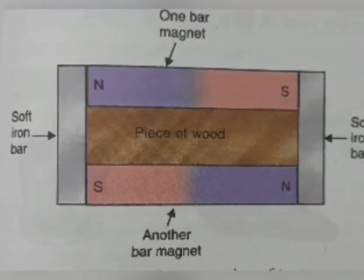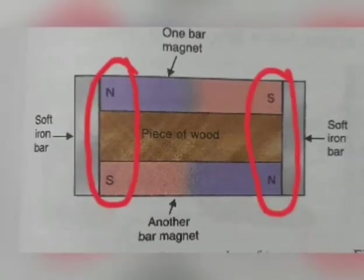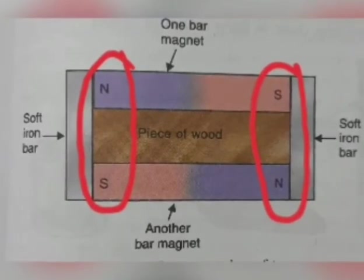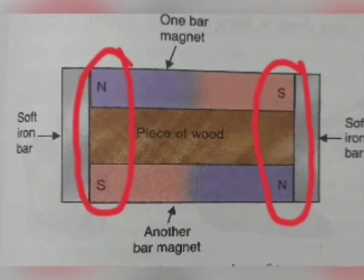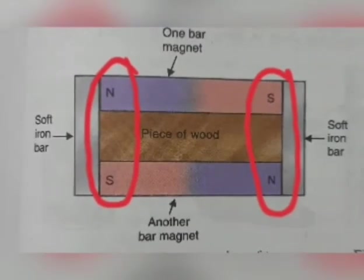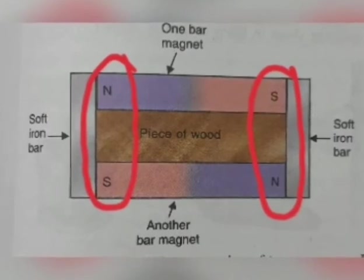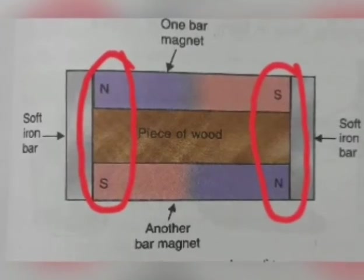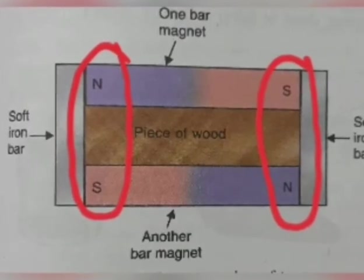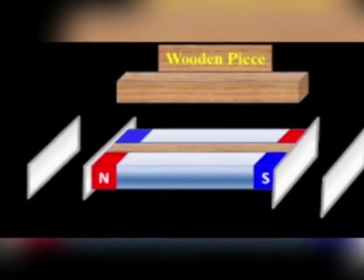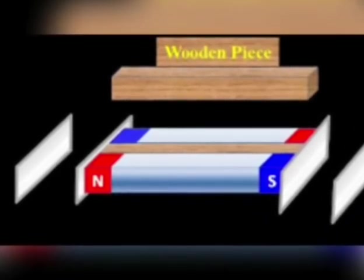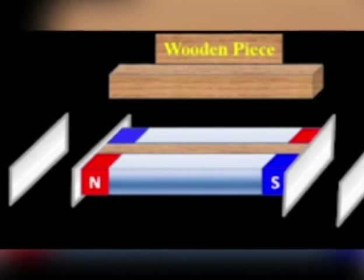The bar magnets are stored in pairs, with their unlike poles on the same side, and bars of soft iron kept across their ends. Two bar magnets are separated by a piece of wood. The soft iron bars kept across the ends of two bar magnets are called keepers because they keep the magnetism of bar magnet safe.